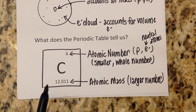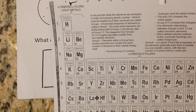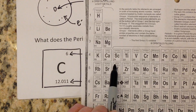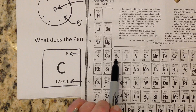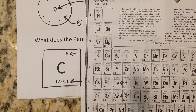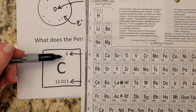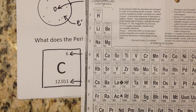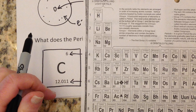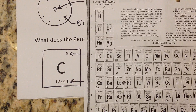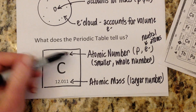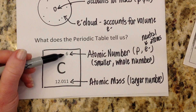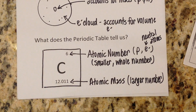One last thing before we do examples: this is just one way you might see this represented on the periodic table. On the version I'm using today, the atomic number is in the lower left corner and the atomic mass is centered at the top. On another version, the atomic number is on the upper right and the mass number is centered at the bottom. It doesn't matter — all periodic tables will have these two pieces of information; you just may see them in different places. You need to know that atomic number is the small whole number and atomic mass is the decimal number.